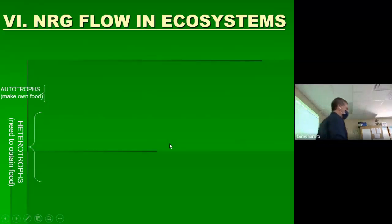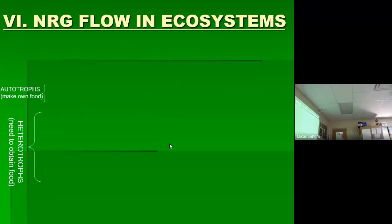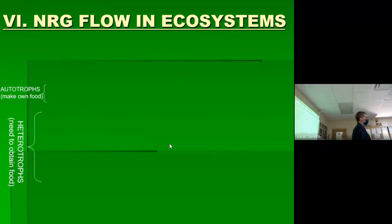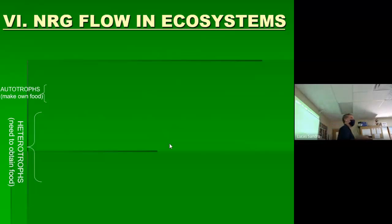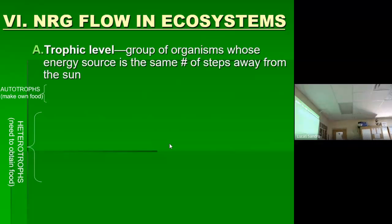The other thing today is about energy flow — and I think this will be quite familiar to you. Maybe the word 'trophic level' isn't familiar, but the concept certainly is: we all ultimately get our energy from the sun. If you go enough steps, your food is energy from the sun — even if you just eat meat, you're eating animals that ate plants, and plants got their energy from the sun. The number of steps you are from the sun is called your trophic level.